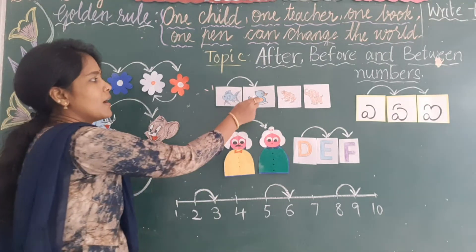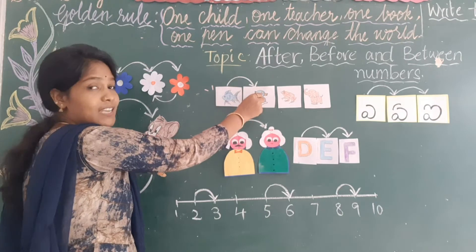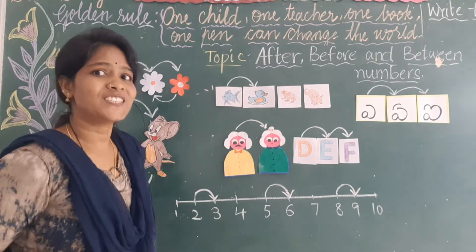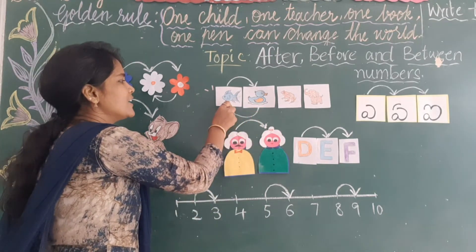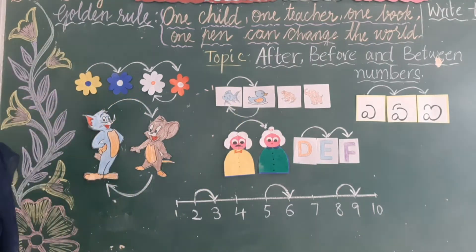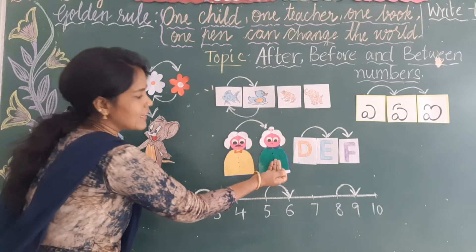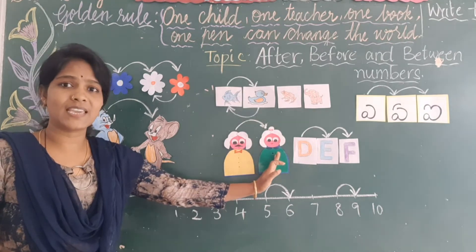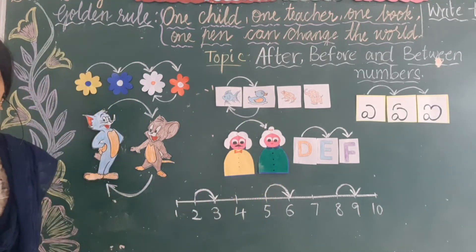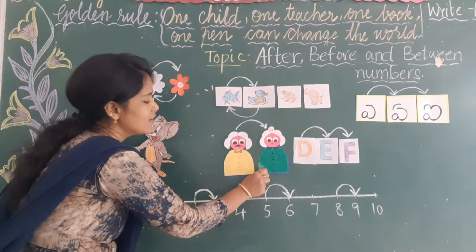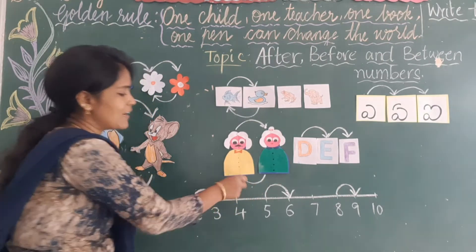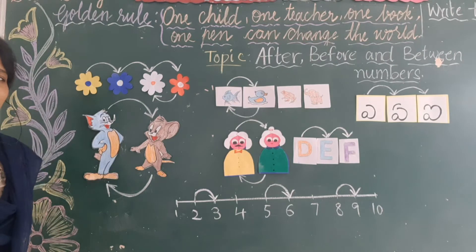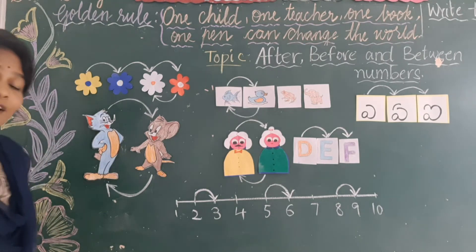Here fish is there, after fish duck is there. Now tell me, before duck who is there? Fish is there — before duck you can see a fish. Now here Grandpa is there and Grandma is there. After Grandpa, Grandma is there. Before Grandma, who is there? Grandpa is there. Very good! Did you understand how to find out the before number?